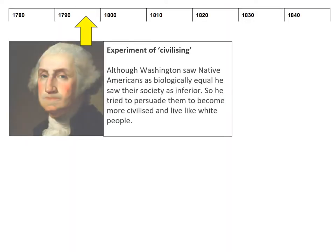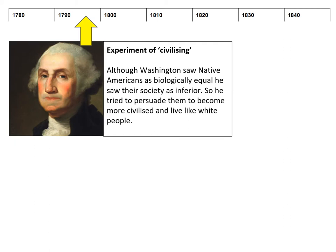In the 1790s, President Washington first decided he was going to try an experiment of what he called civilizing the Native Americans. Washington himself saw the Native Americans as biologically equal but saw their society as inferior to his own white society, so he tried to persuade the Native Americans to become more civilized and live like white people.